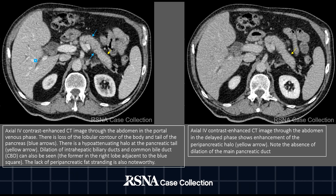The image on the right, obtained in the delayed phase, shows the enhancement of the peripancreatic halo marked by the yellow arrow. Both images show dilation of bile ducts marked by the blue square.